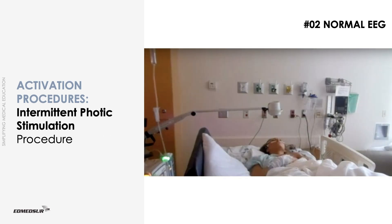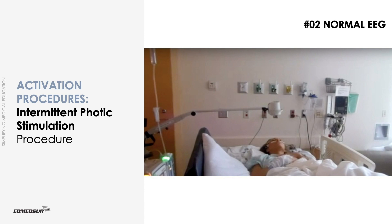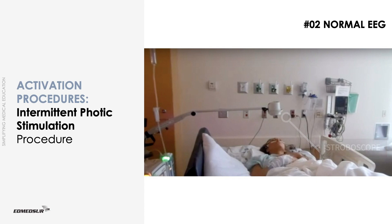Intermittent photic stimulation requires the patient to look at a series of flashing lights of varying frequency, with periods of eyes open and eyes closed. Photic stimulation is performed at least 3 minutes after the cessation of hyperventilation. A stroboscope is used to produce the flashes. Each flash is 10 microseconds in duration. The lamp is placed 30 cm in front of the patient's eyes.